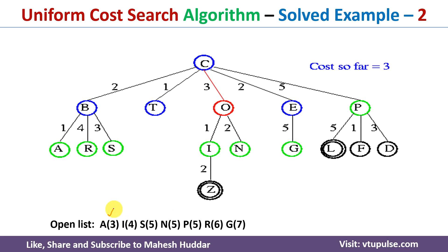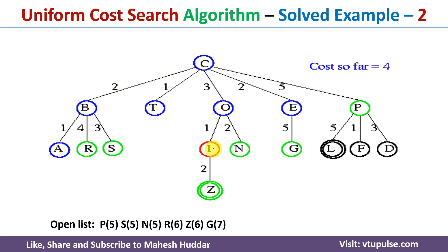We take the first element from the open list, which is A3. Once I select A, there are no further paths from A, so we move to the next element, I4. I select I and explore it. It has only one possibility: Z. The cost is 3 plus 1 plus 2, which equals 6, and Z6 is added into the open list. We have reached up to I so far but have not yet reached Z.